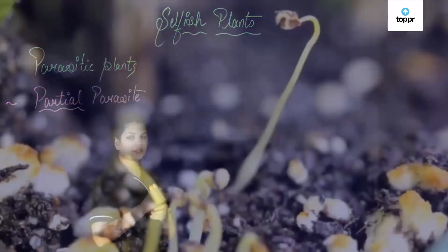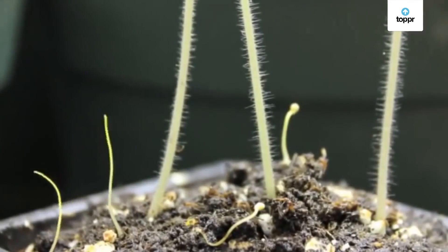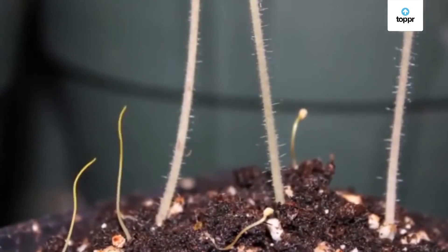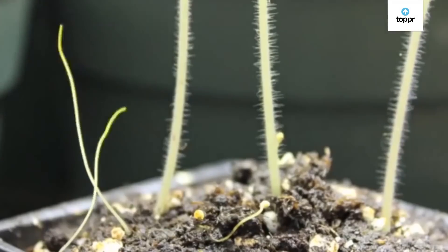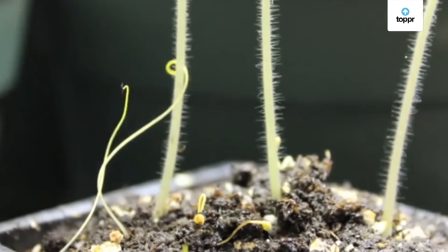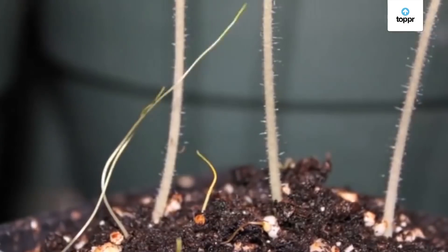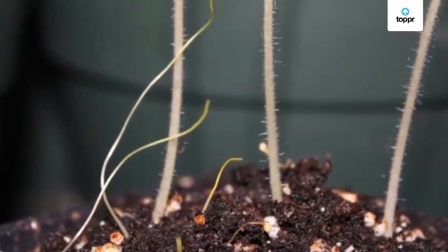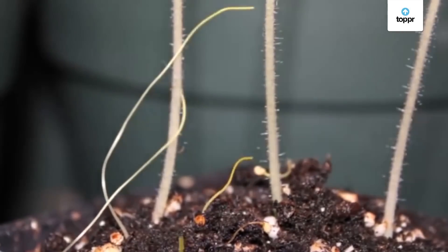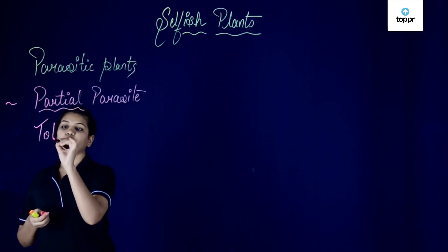On the other hand, if we take the example of dodder, we see that dodder requires nourishment from other plants only. It cannot make its own food; it cannot do anything on its own. Right from seed germination, dodder requires the help of other plants — the host. It grows on the other plant and produces root-like structures into it, through which it absorbs nourishment. This is an example of a total parasite, as it is completely dependent upon another plant for its nourishment.